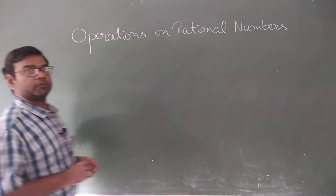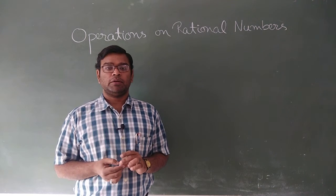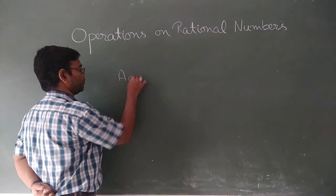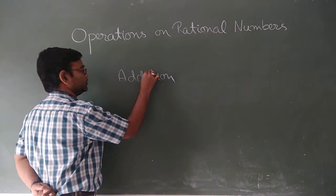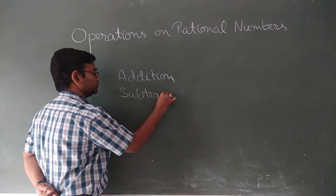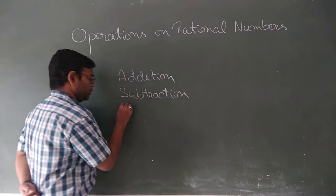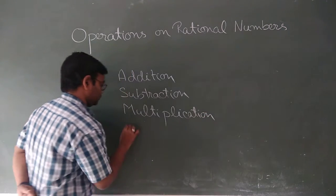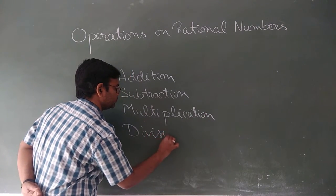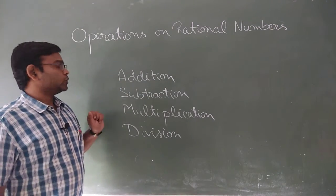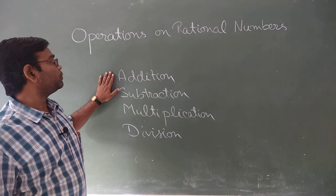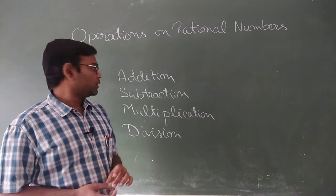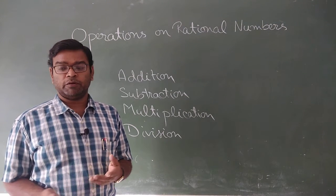As we know, there are four basic operations in mathematics: addition, subtraction, multiplication, and division. So first we will discuss how we perform these four operations on rational numbers. Later we will discuss different properties with examples taken from your exercises.